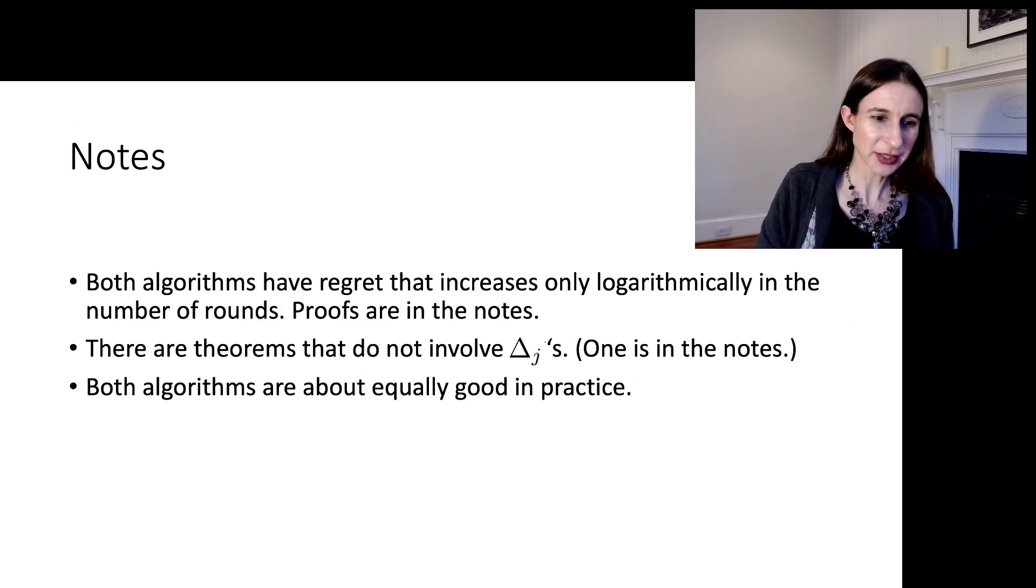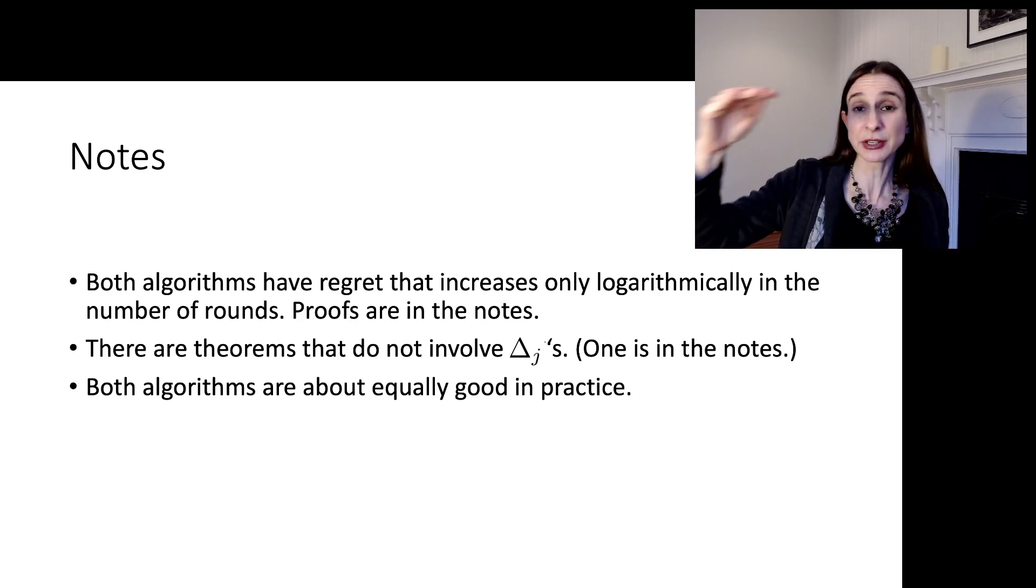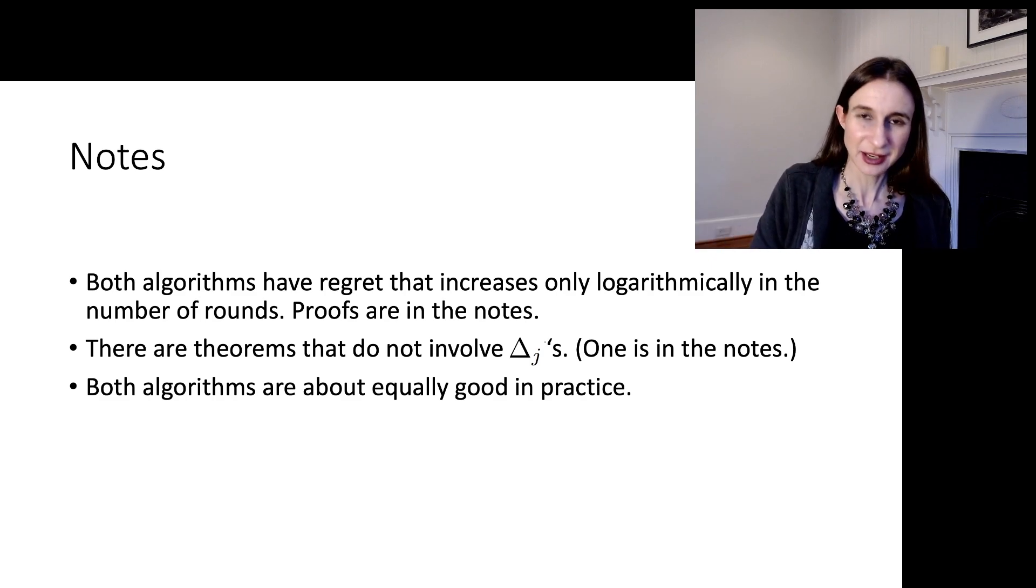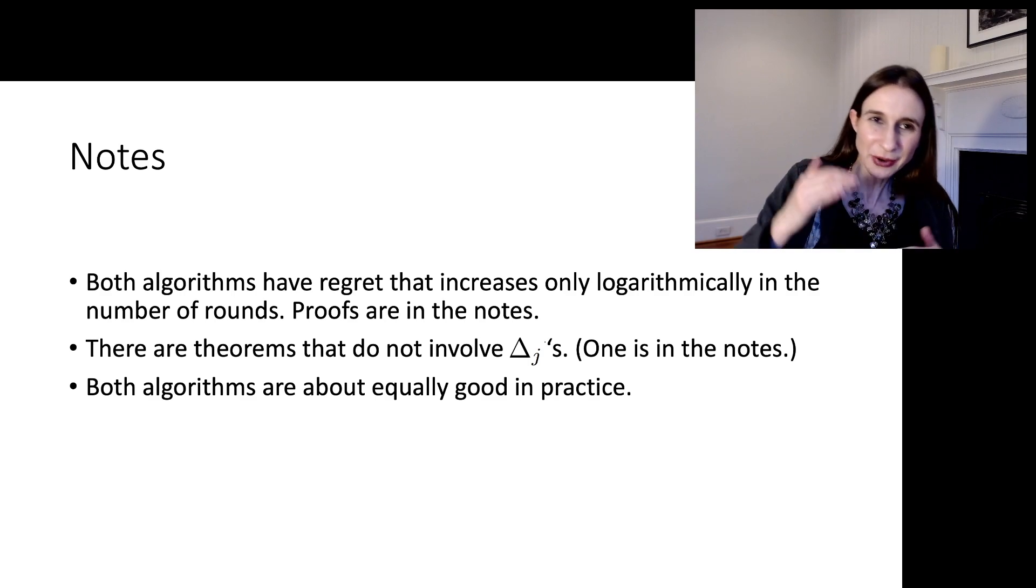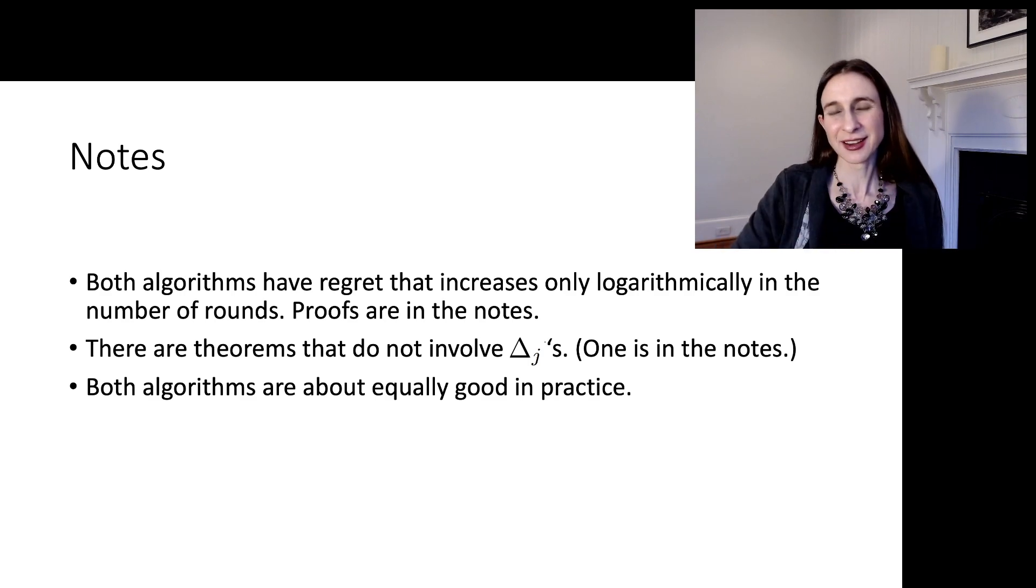Some notes. Both algorithms have regret that increases only logarithmically in the number of rounds, which is really impressive, because that means the regret increases very slowly as you run the algorithms. And the proofs are in the notes. Now, you might think the problem with these theorems is that they involve the δ_j's, and you don't actually know the δ_j's.